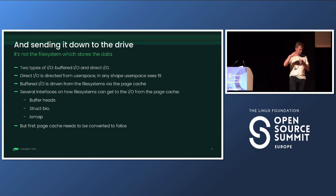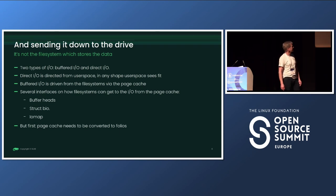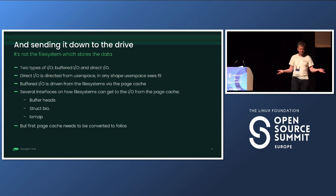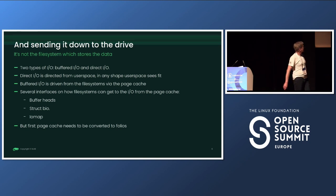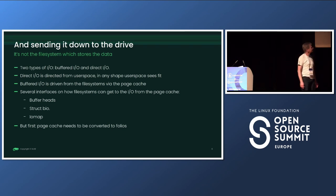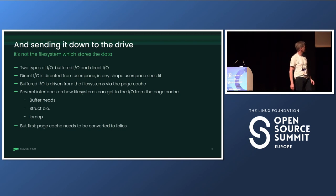The page cache tells the block layer it wants to do I/O. We have two types: buffered I/O and direct I/O. For direct I/O, it's trivial — that's user space telling us to transfer this data now, and you do that. For buffered I/O it's different because that comes from the file system, which typically just cares about the amount of data and doesn't really care how you organize it internally. To do that, there are several interfaces: the original one is called buffer heads, then there's the successor structure called struct bio, and then there's IO map.